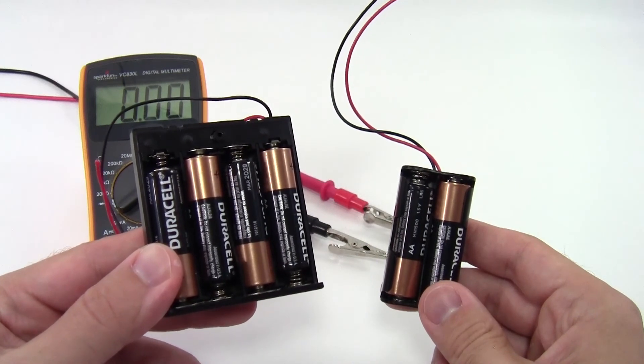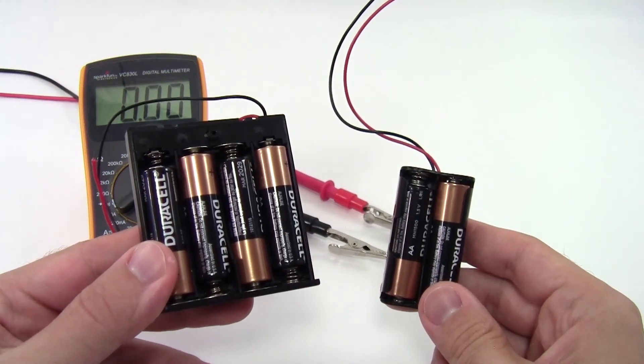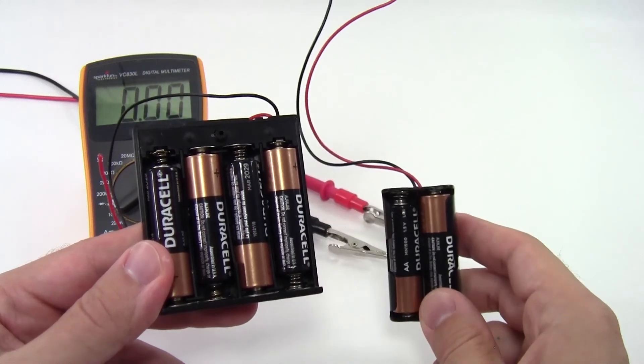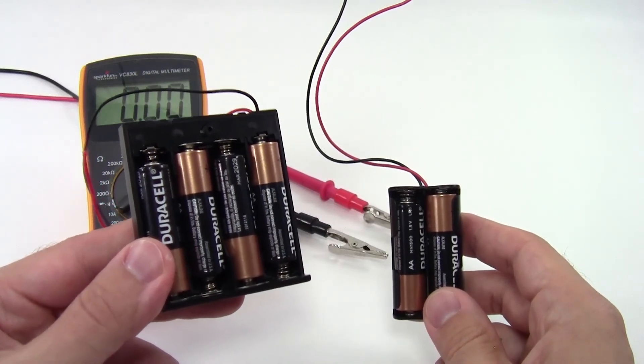This is going to increase your voltage, therefore increase the current through a fixed resistive load, but you're also adding your internal resistances in series, so your voltage drop is also going to increase.